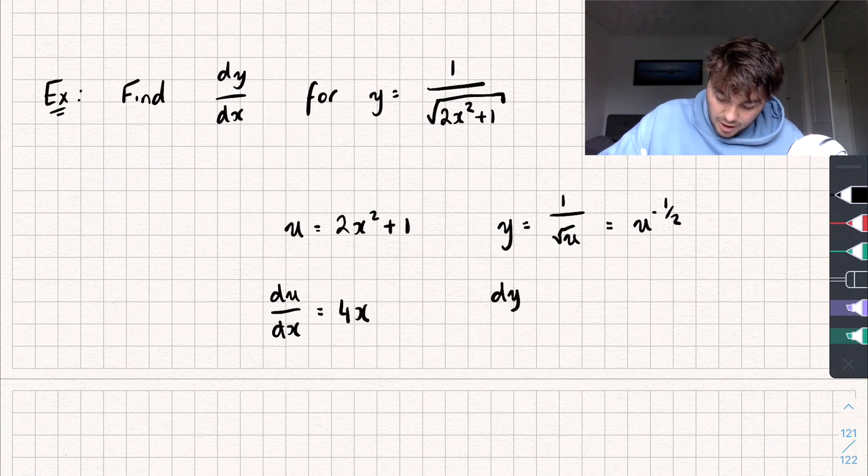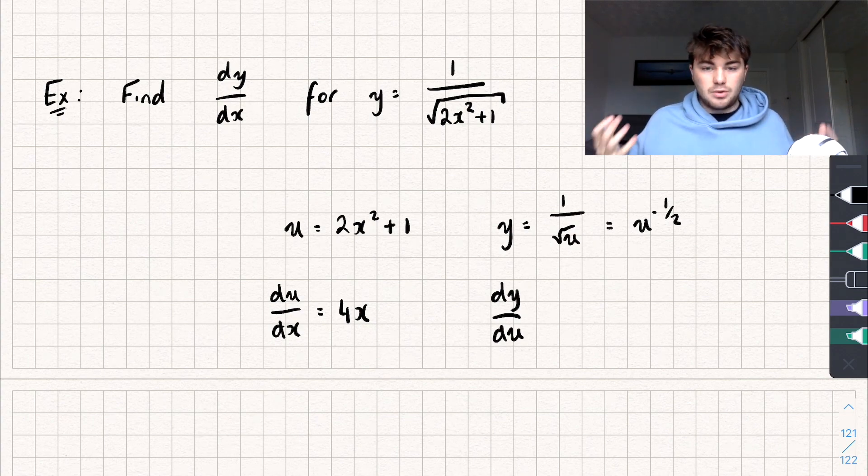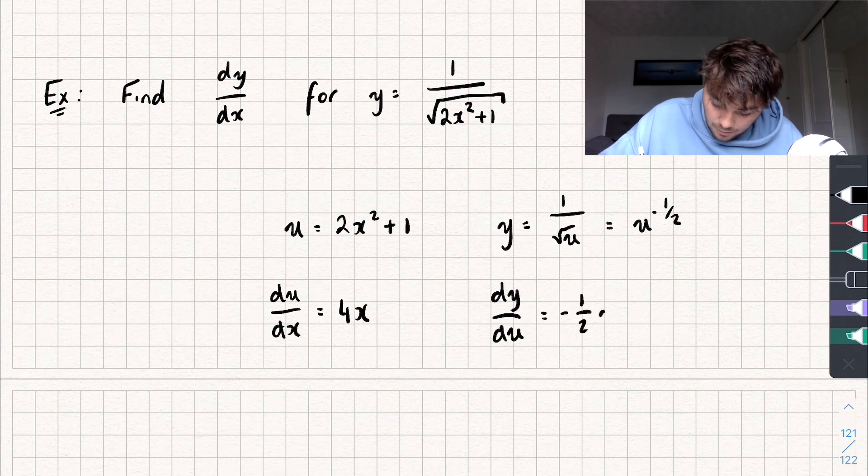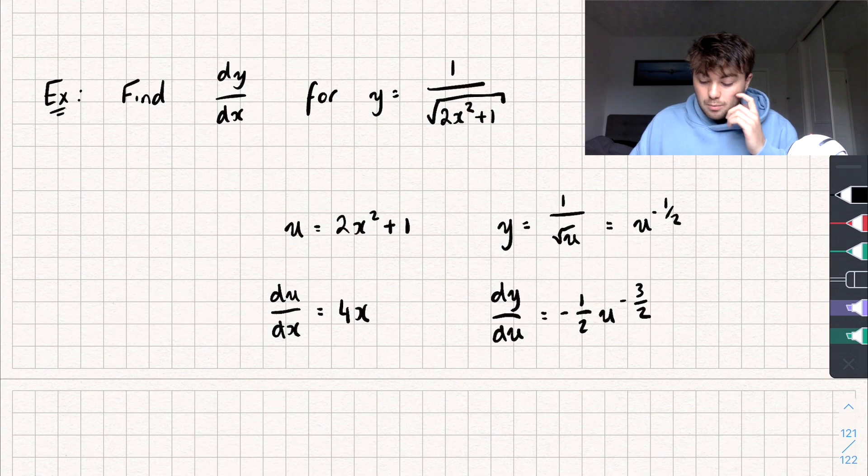And then when we're differentiating y with respect to u, it works the same way as when we're differentiating something with respect to x. It's just rather than x, it's a u. So, this is going to be, well, times by the power, and take one off the power. And so, we get this, which we could probably sort of simplify, but I'll do it a bit later.